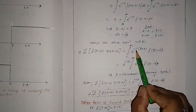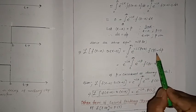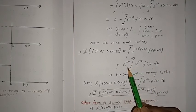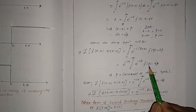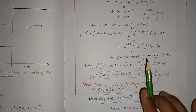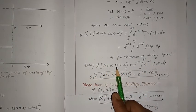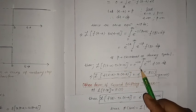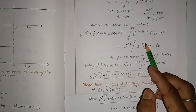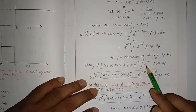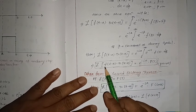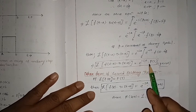We can split e to the power minus s(p plus a) into e to the power minus sp times e to the power minus sa. Since the integration is with respect to p, e to the power minus sa is a constant and can be taken outside. Treating p as a dummy symbol and replacing it with t, this becomes e to the power minus sa times the integral from zero to infinity of e to the power minus st f(t) dt, which is capital F(s).